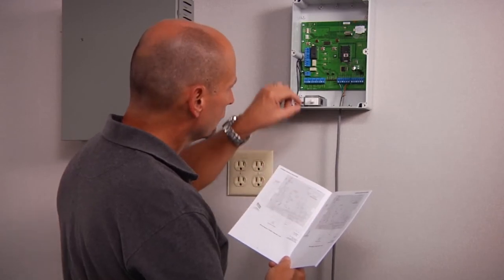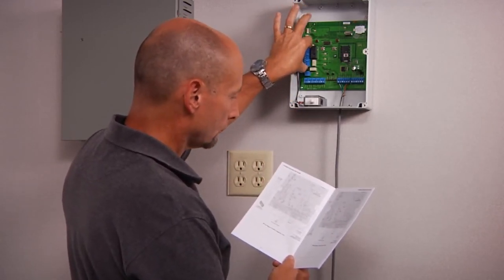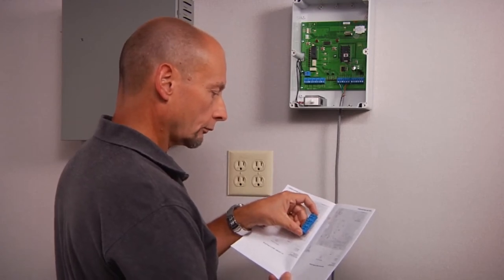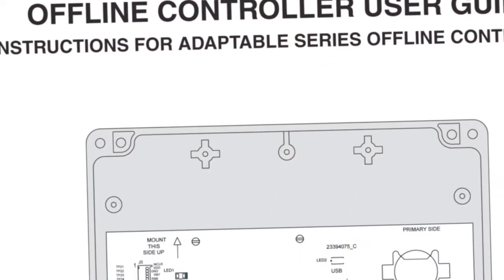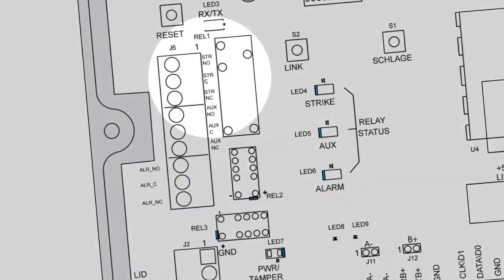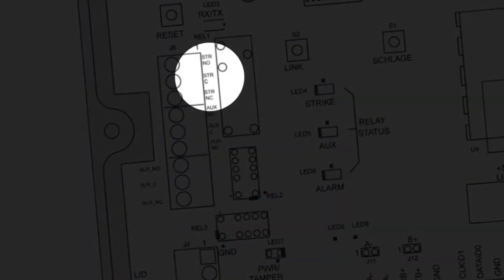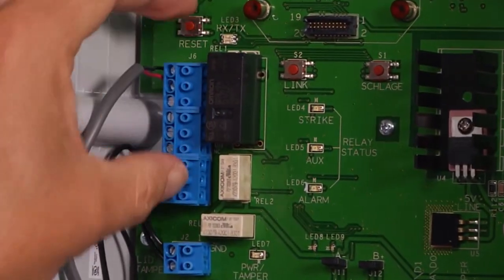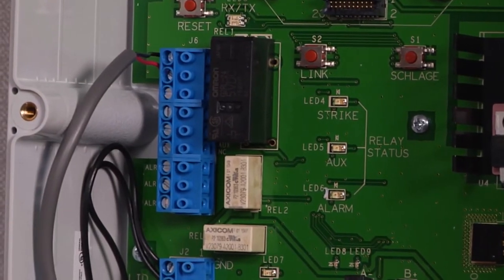To determine proper wiring of your locking device to the relay outputs on the CT5000, consult the CT5000 user guide and the wiring guide from your locking device. The wiring, either normally open or normally closed, will be dependent on the locking device you intend to use. In this example, a fail-secure locking device is used, therefore the device is connected to the normally open terminal.